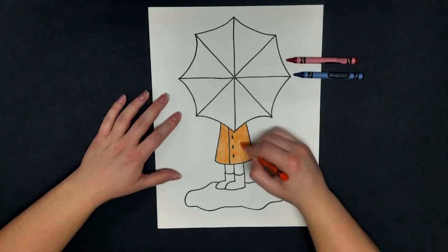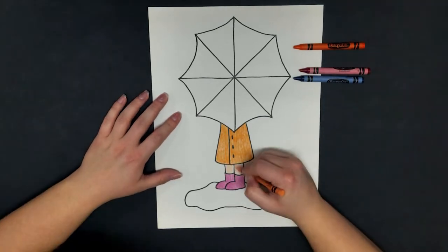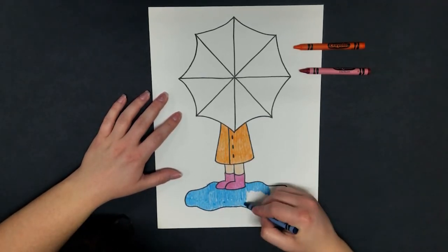Now, I'm going to go back in with crayons and add color to the human and the puddle. Do not color in your umbrella.